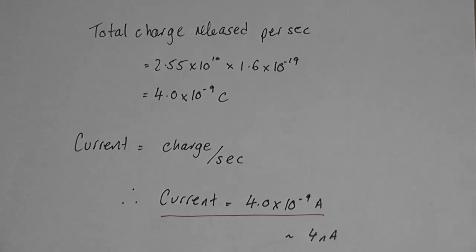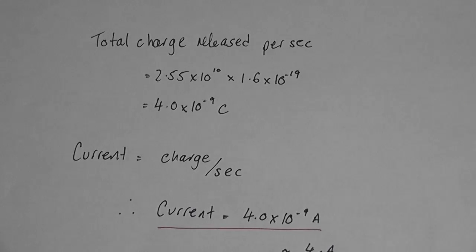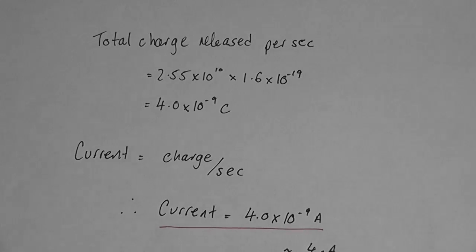Now I know how much charge is released per second. There's 2.55 times 10 to the 10 electrons, each has a charge of 1.6 times 10 to the minus 19. So therefore the total charge released is 4.0 times 10 to the minus 9 coulombs.